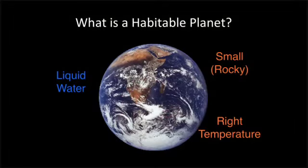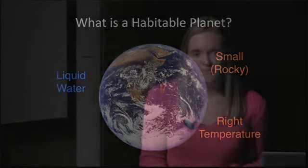The second requirement for a habitable planet is that we want something at the right temperature for liquid water to exist on the surface. We don't want a planet as hot as Mercury, where all the water would have evaporated, and we also don't want something so cold that all the water would be frozen. Now that we've established our two criteria — something small and something at the right temperature — we can look at the Kepler planet candidates and see if any of them match.